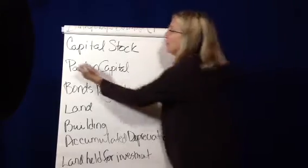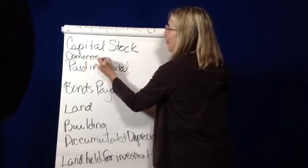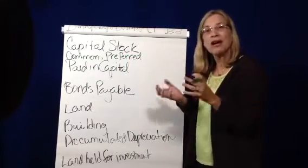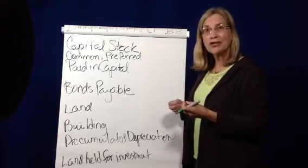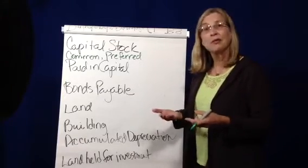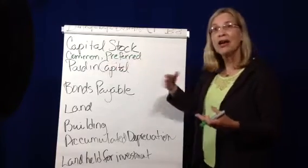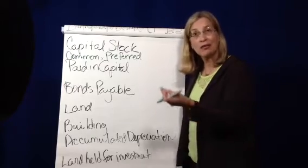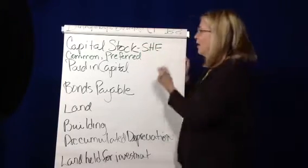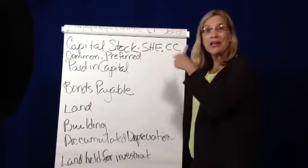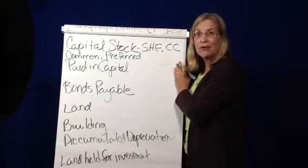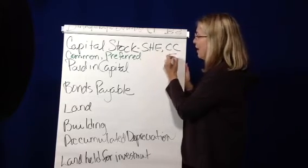Capital stock can also be called common stock, which is one type, or preferred stock. Capital stock is the overarching category for all kinds of stock. Stock is what a corporation gives its investors when investors give the corporation cash or other resources to run the business. So capital stock is evidence of ownership by investors in the business. Capital stock is part of stockholders' equity, and because it comes from external owners, it's part of what we call contributed capital. When we see changes in the capital stock account from a cash flow standpoint, it's part of a financing activity.